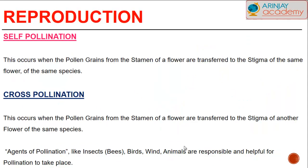Self-pollination occurs when the pollen grains from the male part of a flower are transferred to the female part of the same flower of the same species. Whereas in cross-pollination, it takes place when the pollen grains are transferred from the stamen or male part to the stigma or female part of another flower of the same species. Pollinating agents like insects, bees, birds, wind, and animals are all responsible and helpful for pollination to take place.